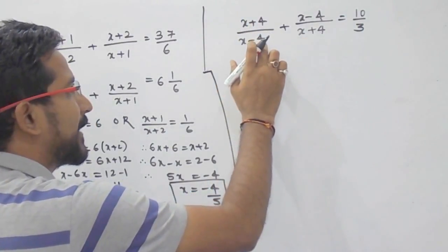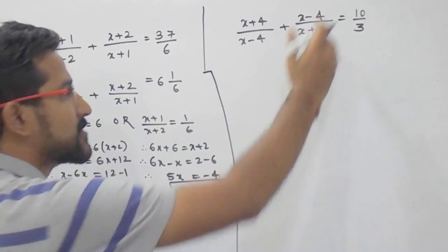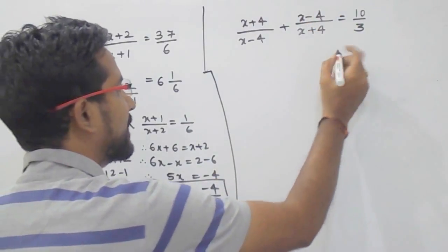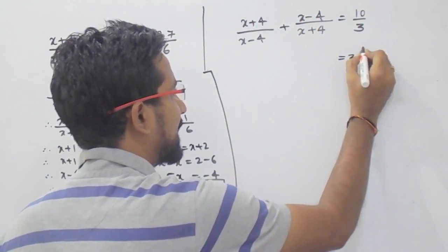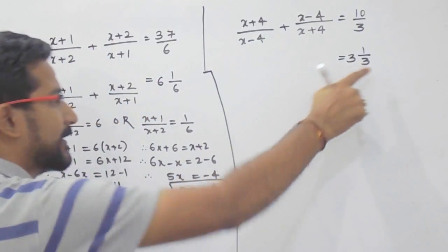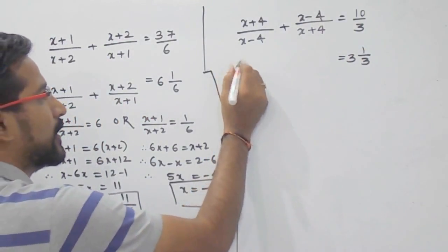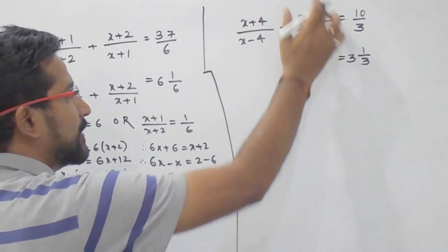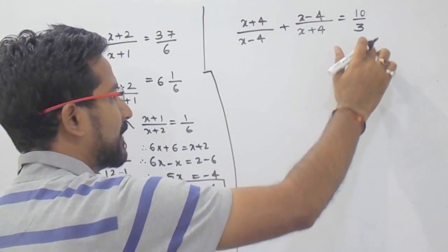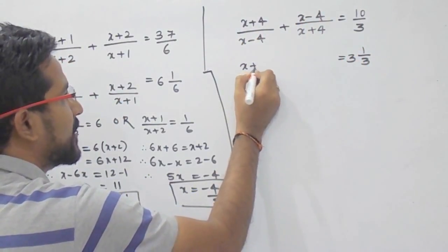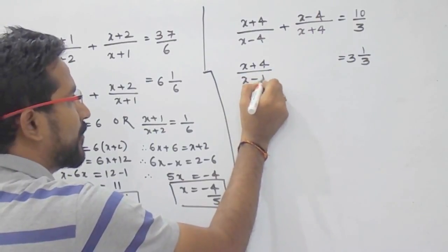Again: (x+4)/(x-4) plus (x-4)/(x+4) equals 10 by 3. If you write 10 by 3, it can be written as 3 and 1 by 3 — that is (3×3+1)/3 = 10/3. So this term and this term are reciprocal of each other, and 3 and 1 by 3 are also reciprocal of each other. We can apply the trick we have already studied.